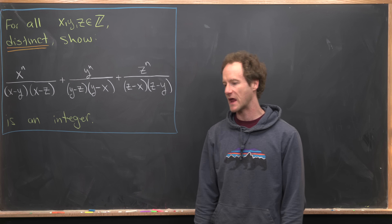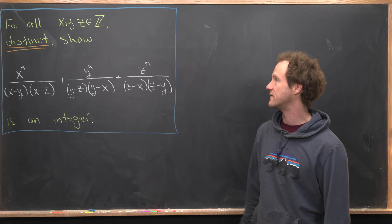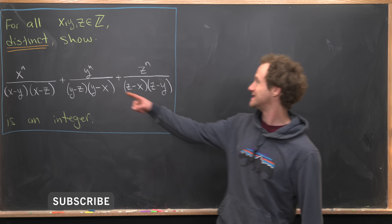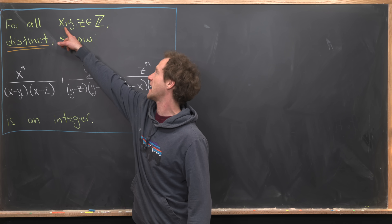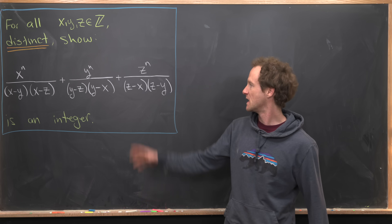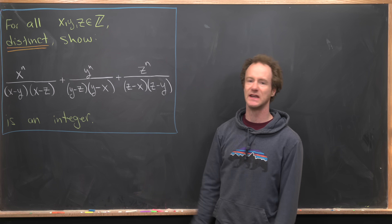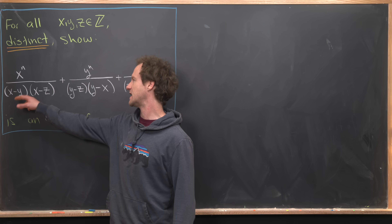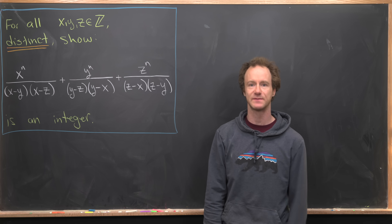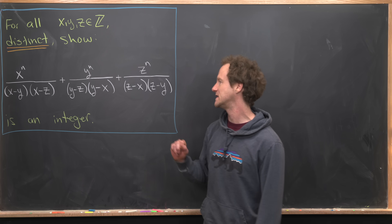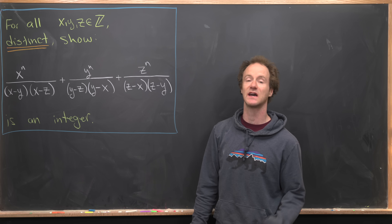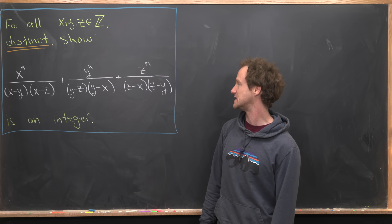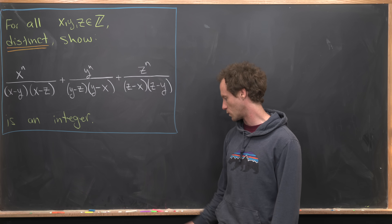Here we're going to look at a nice problem involving a rational function in three variables. Our goal is to show that for all distinct integers x, y, and z, this expression is an integer. The expression is: x^n over (x minus y)(x minus z), plus y^n over (y minus z)(y minus x), plus z^n over (z minus x)(z minus y).